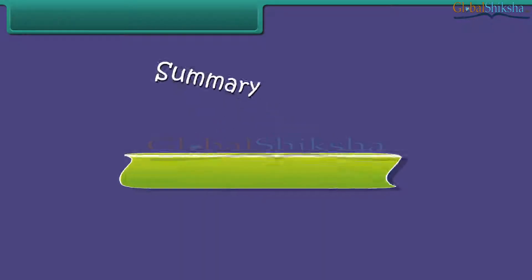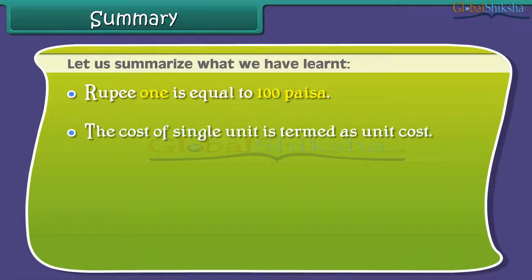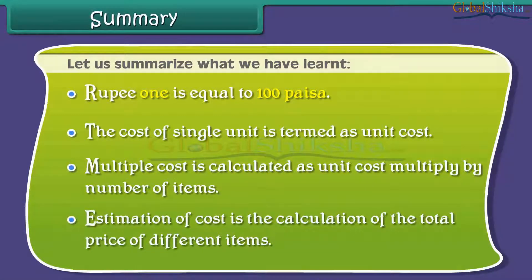Let us summarize what we have learned. Rupee 1 is equal to 100 paisa. The cost of a single unit is termed as unit cost. Multiple cost is calculated as unit cost multiplied by number of items. Estimation of cost is the calculation of the total price of different items.